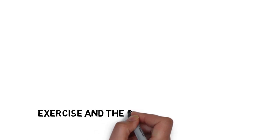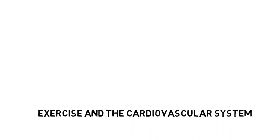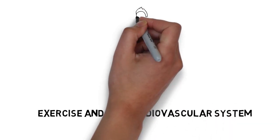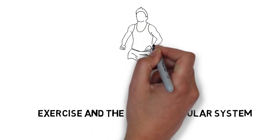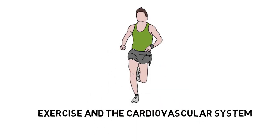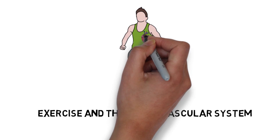Exercise and the cardiovascular system. During exercise, the cardiovascular system works harder to maintain bodily temperature. It also ensures sufficient oxygen delivery to the muscles in order to support aerobic respiration.